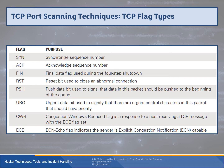Here we have an explanation of the different flag types: SYN (synchronization), ACK (acknowledgement), FIN (finish), RST (reset), PSH (push), URG (urgent). We've seen these before, but we want to refresh ourselves. Two extras to be aware of are the CWR (Congestion Window Reduced) flag and the ECE (ECN Echo) flag.